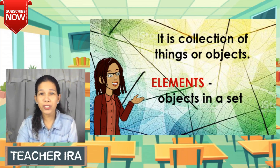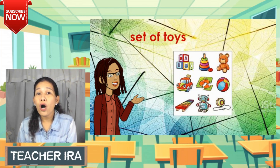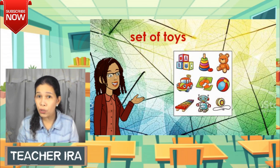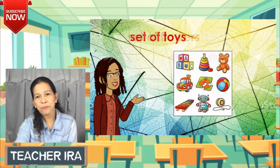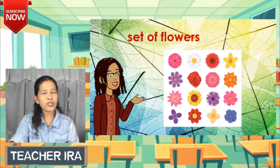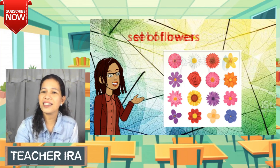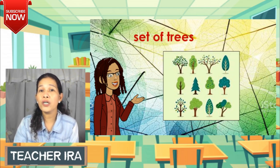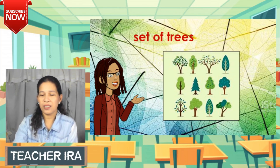Now let me show you some examples of sets. What do you see in the pictures? All are pictures of toys — maybe different kinds, but since all of them are toys, we call them a set of toys. Next, all are flowers — different kinds, but since all of them are flowers, we call it a set of flowers. And this one is a set of trees.